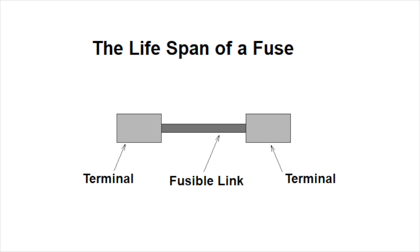The fuse rating is not the current at which it will fail it is a current at which it will operate. Therefore a 20 amp fuse will pass current at 20 amps without damage and will fail at some point above 20 amps.